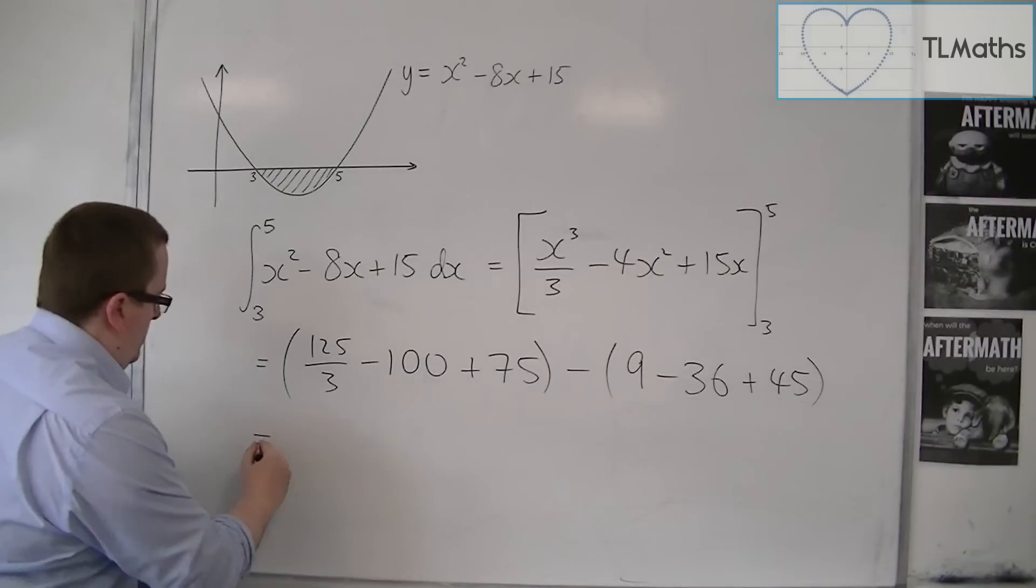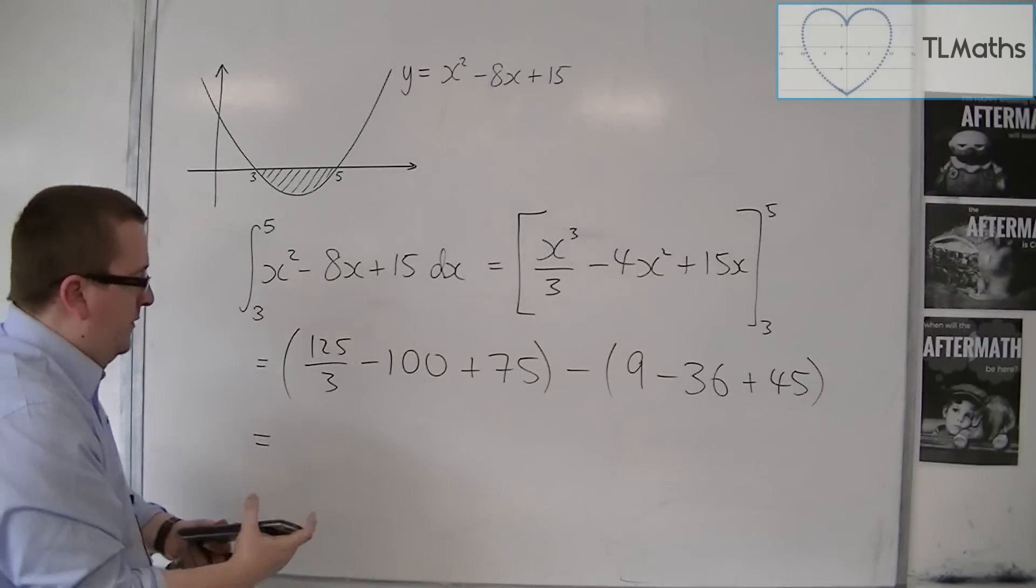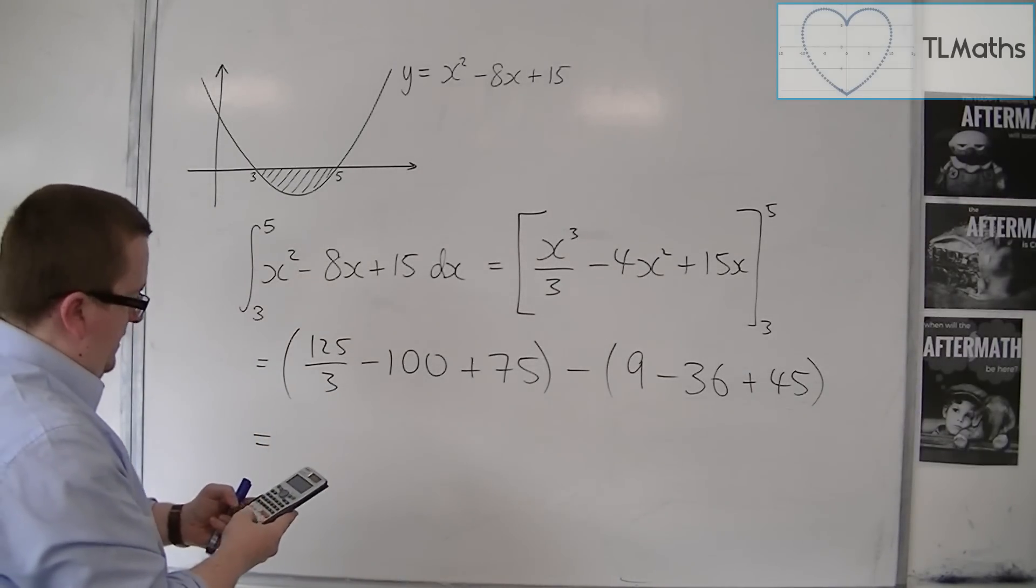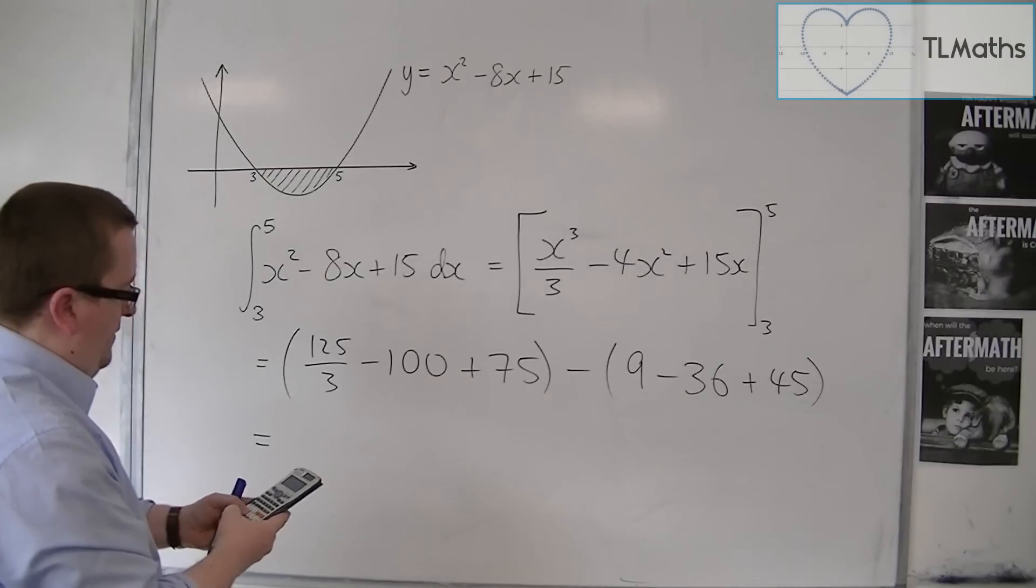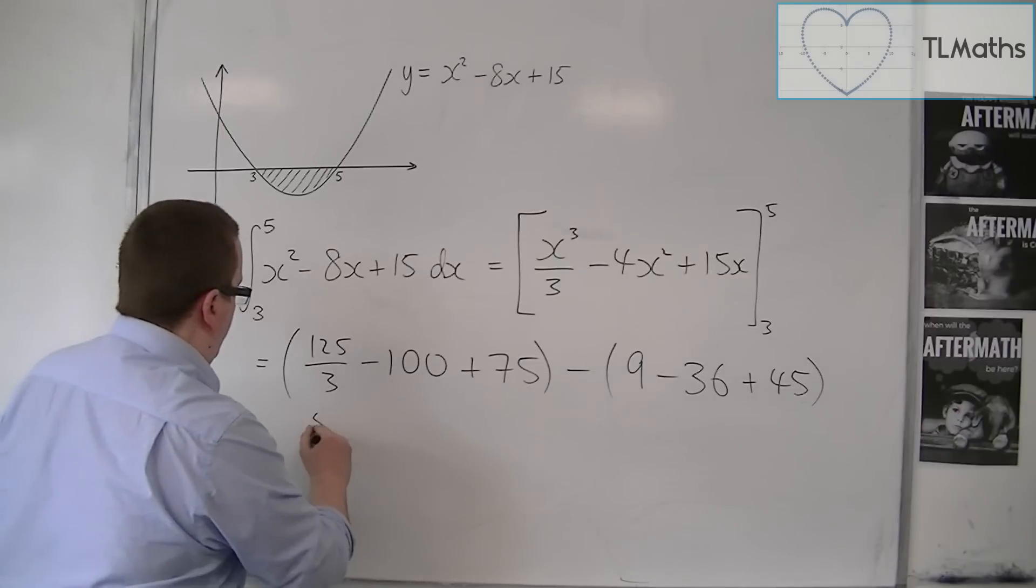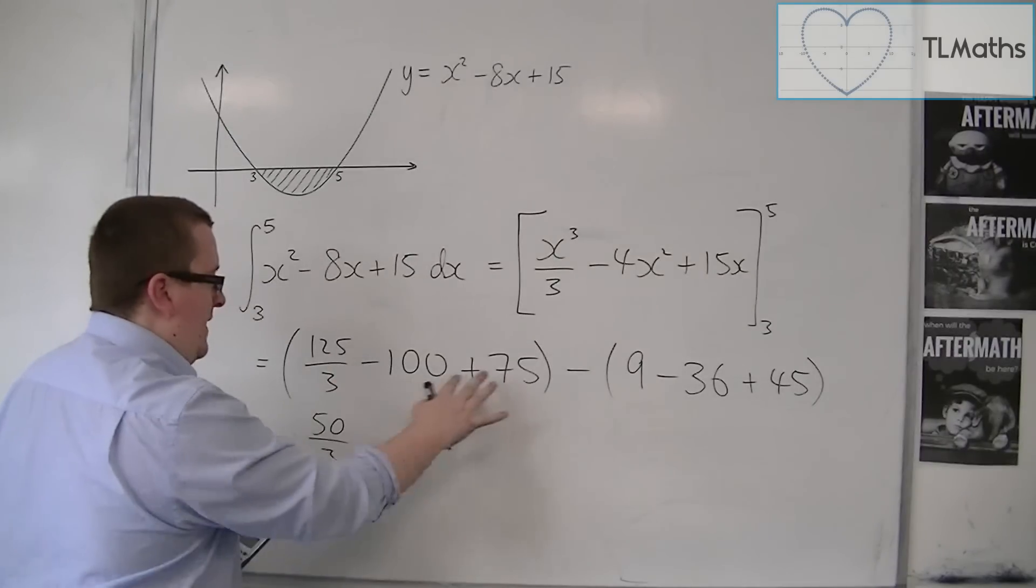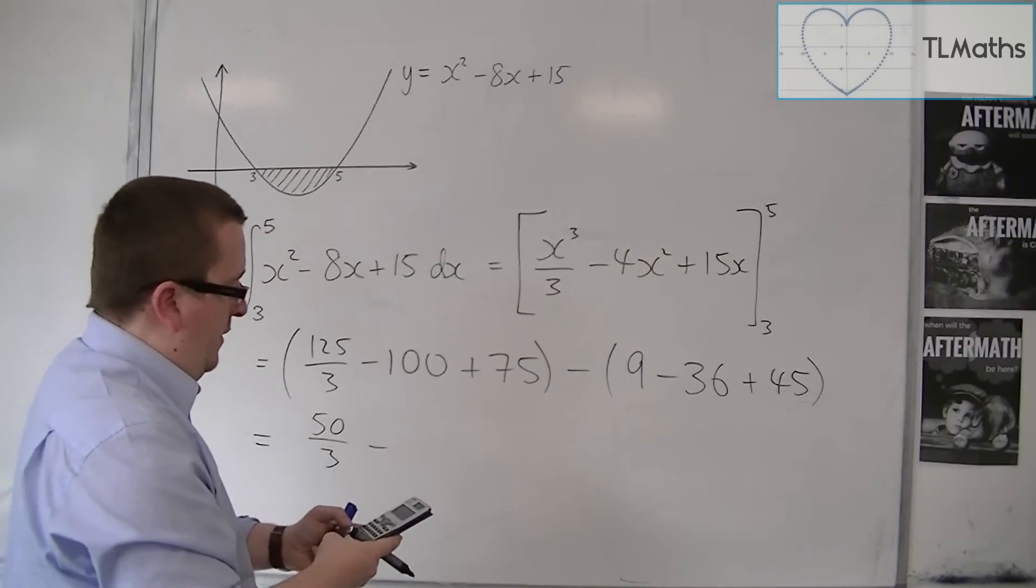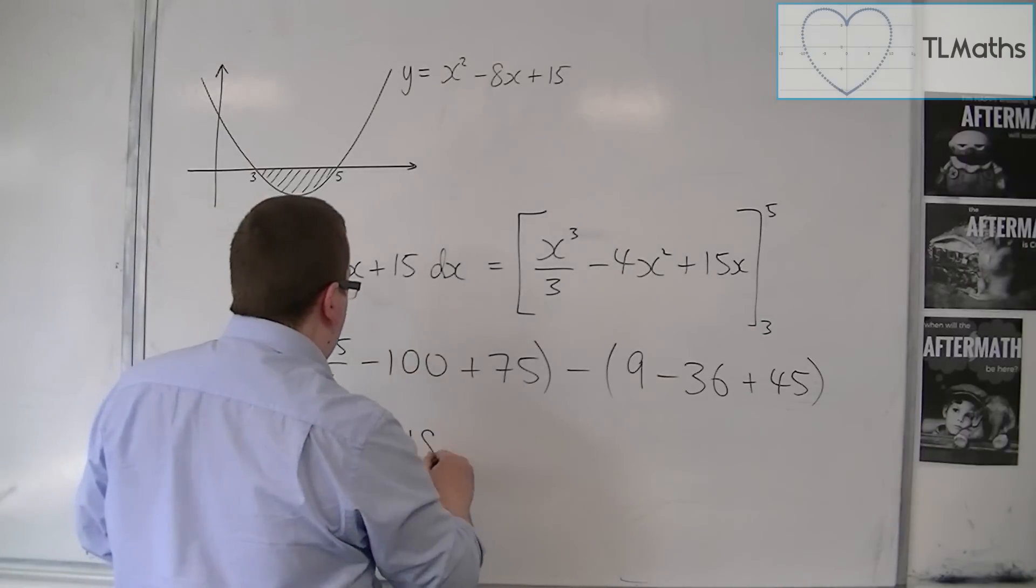So go to the calculator now. We've got 125 over 3, take away 100 plus 75. So this is 50 over 3. That's the first bracket. Take away, 9 take away 36 plus 45, so take away 18.